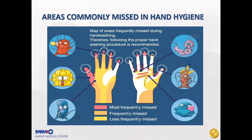These slides show the commonly missed areas of our hands when performing hand hygiene. We usually miss cleaning our fingertips, in between fingers, and our thumbs. By performing the proper hand hygiene technique, we will be able to clean all surfaces of our hands.